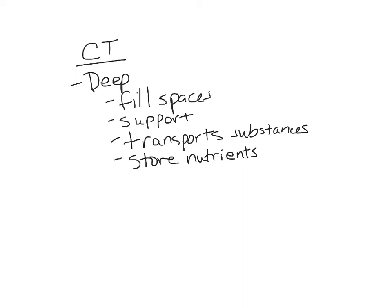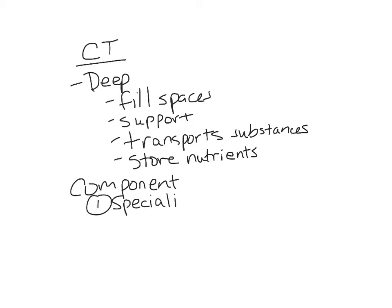Connective tissue proper has some very distinct characteristics. There are three components. The first component is specialized cells. For example, an adipocyte stores triglycerides — that's fat, energy storage. A cartilage cell, the chondrocyte, helps produce the matrix of the cartilage, producing the bulk of the cartilage.